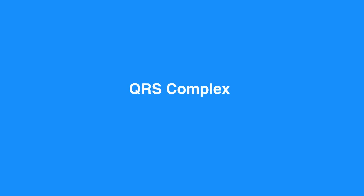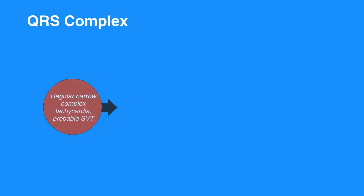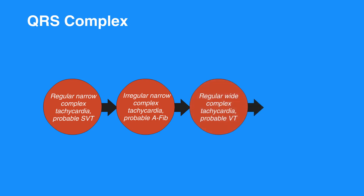Assess the QRS complex, which includes regular narrow complex tachycardia, or probable SVT; irregular narrow complex tachycardia, or probable AFib; regular wide complex tachycardia, or probable VT; and irregular wide complex tachycardia.